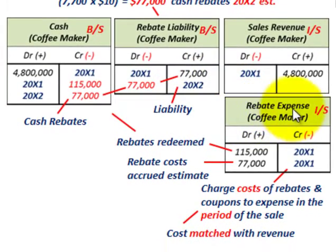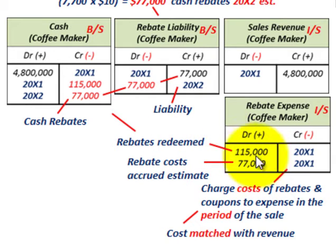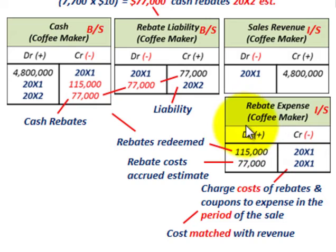The other important point is the rebate expense on the income statement. Whatever sales you make that include coupons in the boxes, you have to recognize a rebate expense, because you must match everything sold — including the coupons — with the estimated redeemable amount. We had rebates redeemed in 20X1, but we also had to recognize as rebate expense the accrued estimate for future redemptions. That covers this basic example of cash rebates and how to set up the liability for any outstanding rebates.